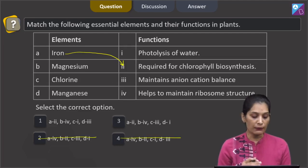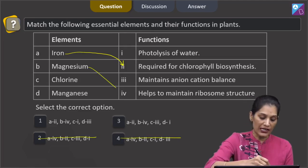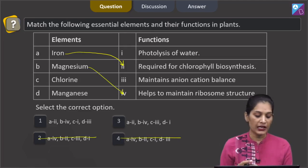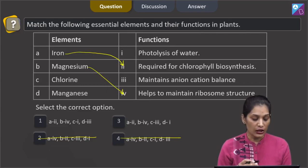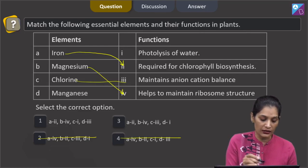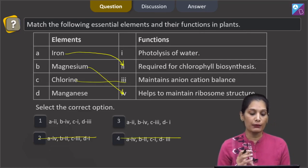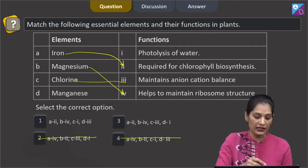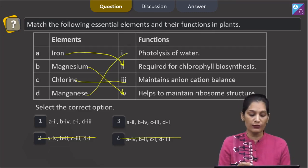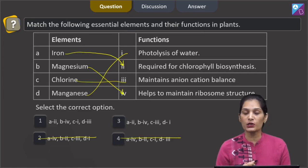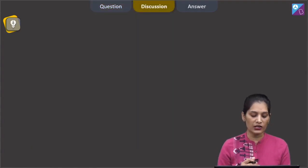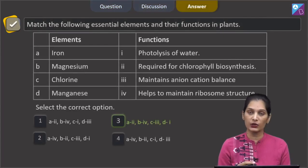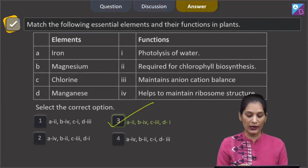Now magnesium - magnesium is required to maintain the ribosome structure. So b matches with fourth. Now c: chlorine. Chlorine maintains the anion-cation balance, so c matches with third. And d: manganese. Manganese is required for the photolysis of water during the process of photosynthesis. So d matches with first. By analyzing the options, we can say the correct option for the given question is option number three.